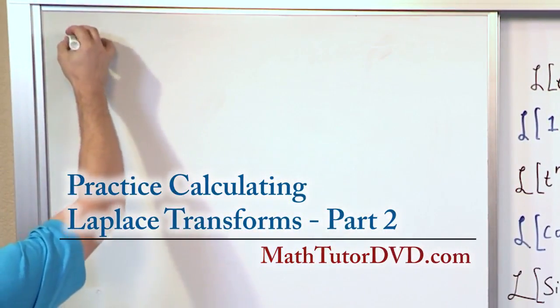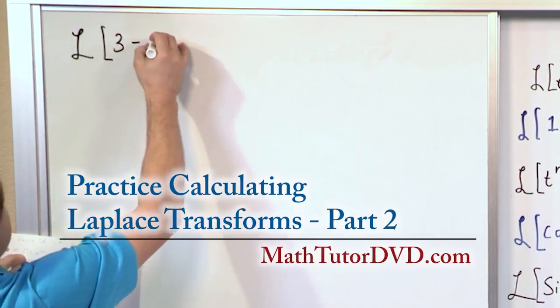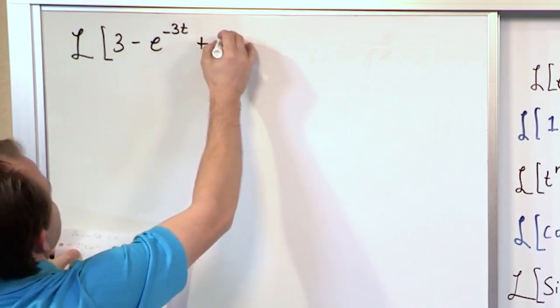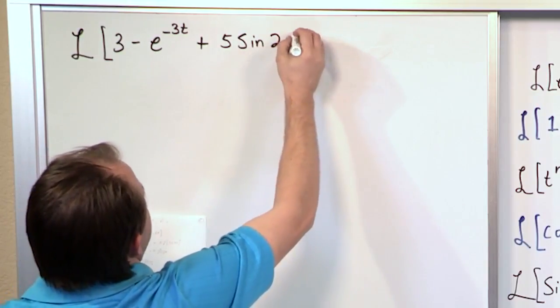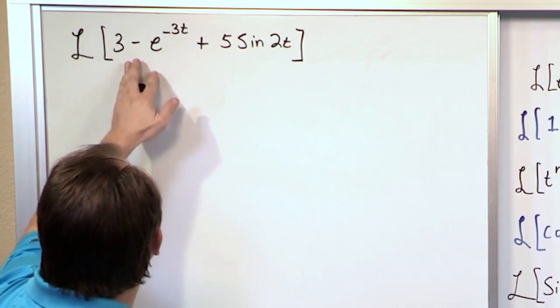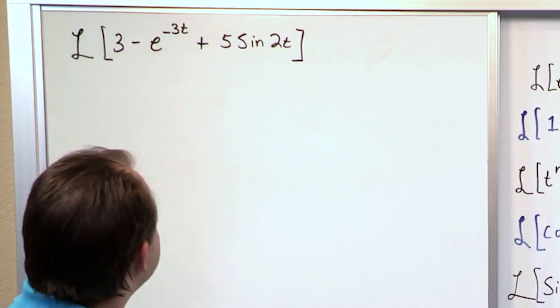First let's look at taking the Laplace Transform of 3 minus e to the minus 3t plus 5 times the sine of 2t. So again we have 3 terms, linear combination of 3 terms, each one we know how to deal with so let's apply it in sequence.